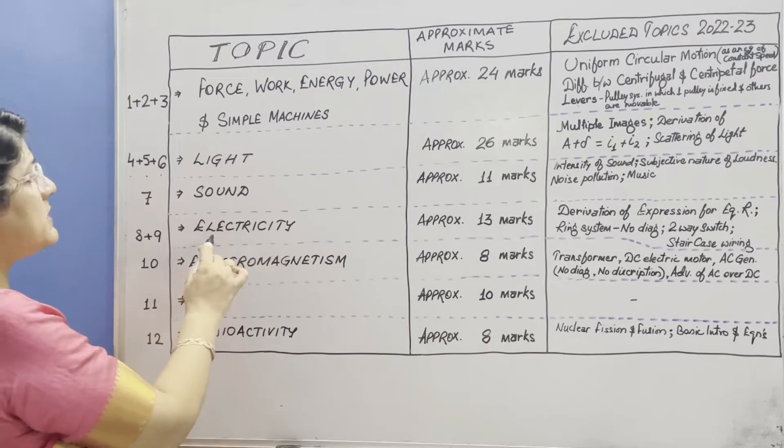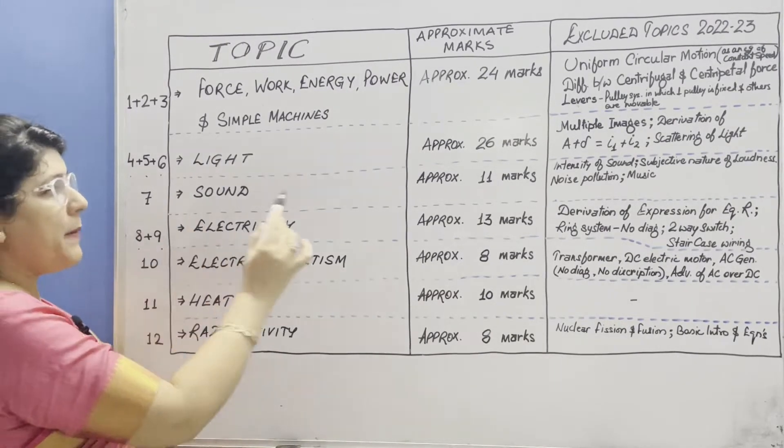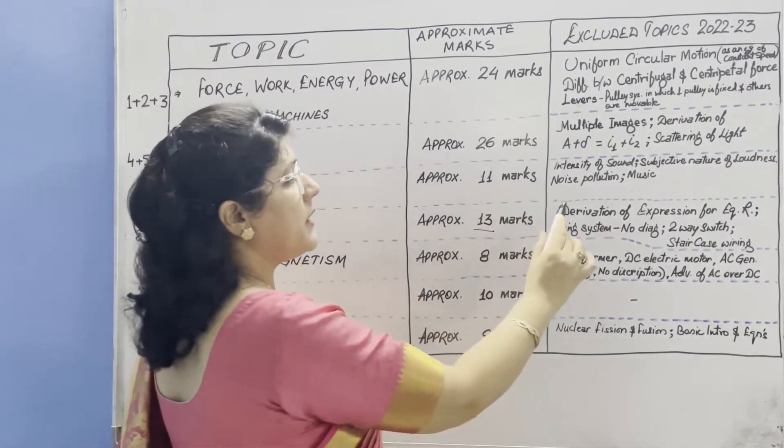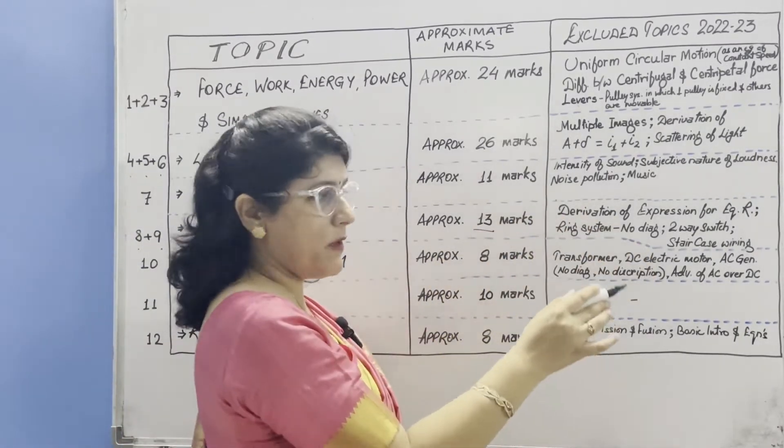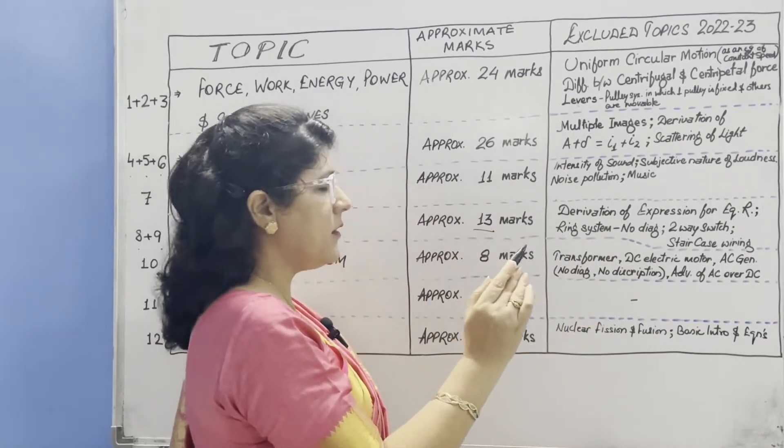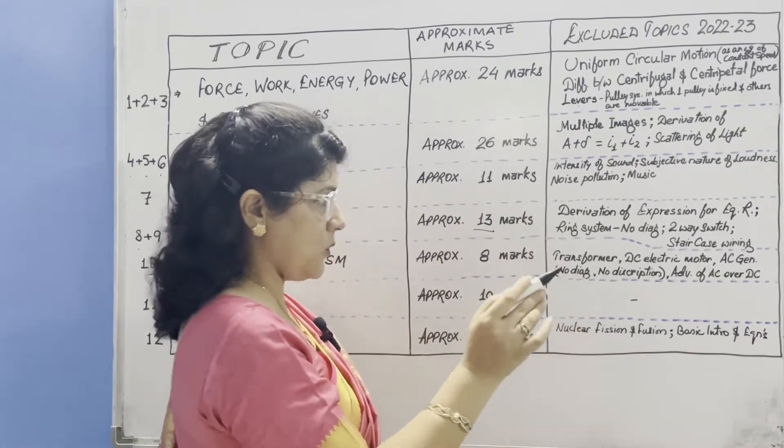Our next topic is electricity which is chapters 8 and 9, approximately 13 marks. From this topic derivation of expression for equivalent resistance is excluded, ring system only diagram is excluded, and two-way switch and staircase wiring - this whole topic is excluded.